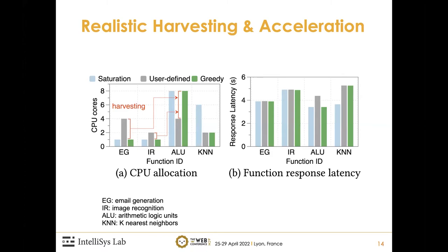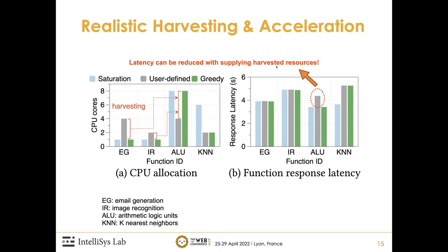We perform harvesting and acceleration on four real-world serverless applications. We have two additional applications: IR (image recognition) and ARU (arithmetic logic unit). We harvest three CPU cores from email generation and one CPU core from image recognition, and reassign those four cores to the ARU function. The end-to-end function response latency is reduced, while the performance of the two harvested functions is not degraded due to careful harvesting.